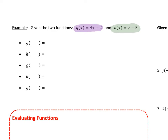What we need to do with these functions is evaluate and express them in different ways. For example, instead of g of x, if I have g of heart, since that heart takes the place of x, a heart is going to replace every single x inside the function. So instead of g of x equals 4x plus 2, g of heart is going to be 4 heart plus 2. Similarly, for h of star, instead of x's in the h formula, I put a star — so it becomes star minus 5.